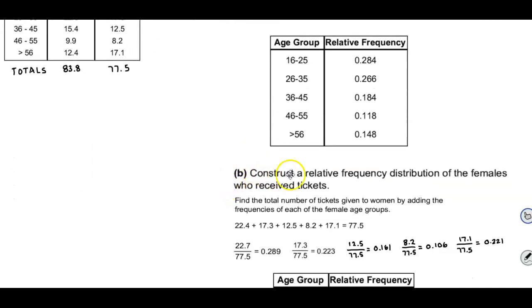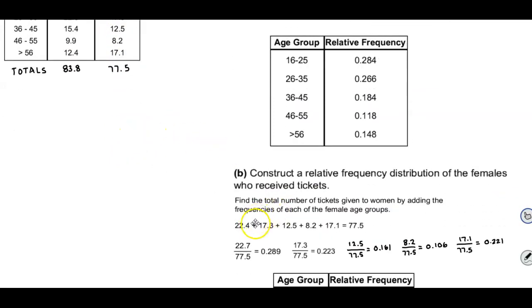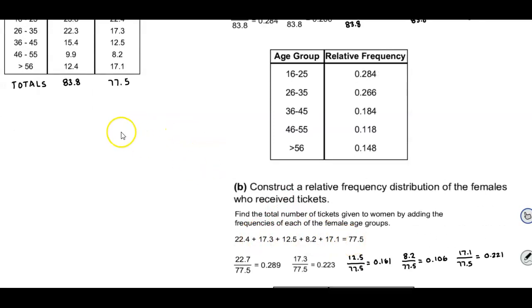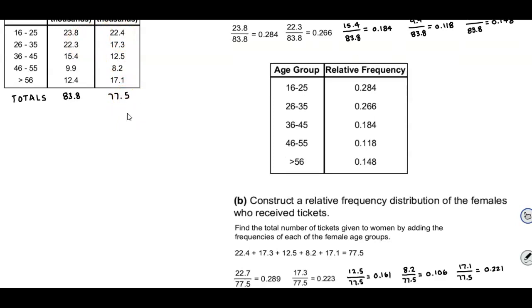And now we're going to construct a frequency distribution of the females who received tickets. So again we're going to find the total of that column which gives you 77.5. And then for each age group we're going to take that number and divide it by the total to find the relative frequency or the proportion.